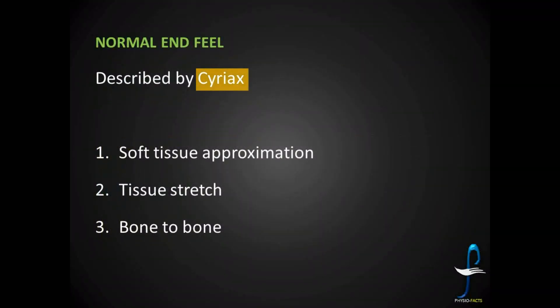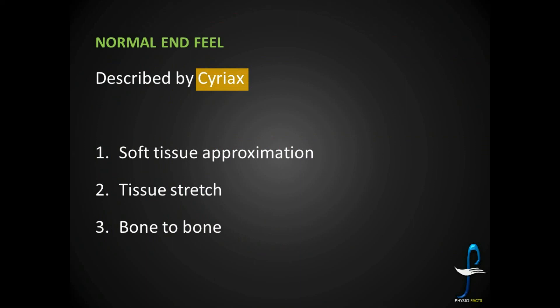In the previous video, I was telling about normal end-feels as described by Cyriax. There are three types of normal end-feels: soft tissue approximation, tissue stretch, and bone-to-bone end-feel. These are the structures involved — soft tissues getting approximated to each other, soft tissues getting stretched, and bones coming in contact with each other.